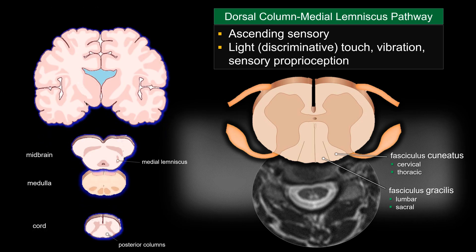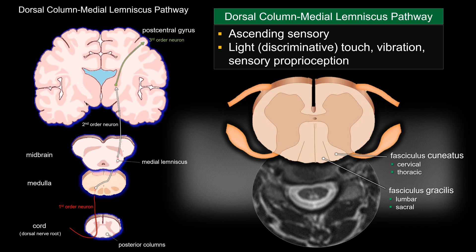The sensory neuron from the periphery extends as the first-order neuron into the dorsal root ganglion and into the posterior column. You then ascend into the medulla, where you decussate to the other side, connecting with the second-order neuron through the medial lemniscus. That extends into the thalamus, where you connect with the third-order neuron, which extends into the postcentral gyrus, or primary sensory cortex.